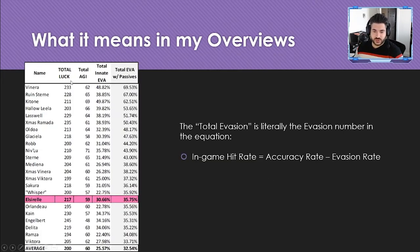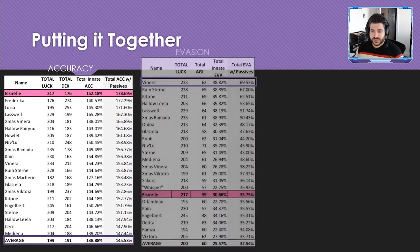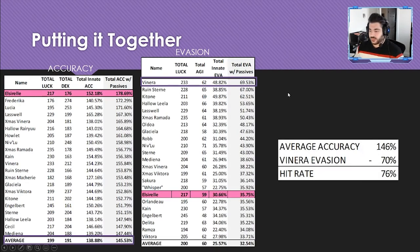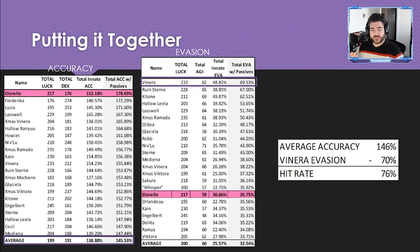In my evasion overview, you take total agility divided by 1.5, luck divided by 2.5, plus any external evasion or trust masteries — roll it all up into one percentage. Tying it together: take the average accuracy of 145% and Venera's total evasion of 70%. The formula is accuracy percentage minus evasion percentage: 146 minus 70 gives a 76% chance to hit from the front. Attacking from the side adds 15% accuracy; from the back adds 30%.